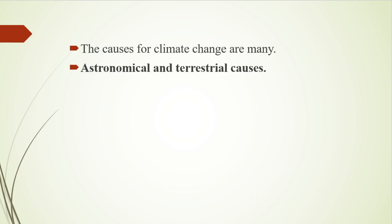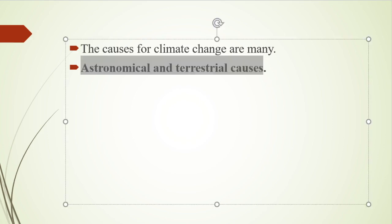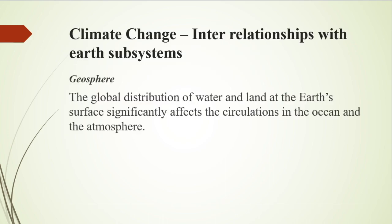The astronomical causes are changes in solar output associated with sunspot activities. Sunspots are dark and cooler patches on the sun which increase and decrease in a cyclical manner. The main causes of climate change also include humanity's increased use of fossil fuels such as oil and gas to generate electricity, run cars and other forms of transport, and power manufacturing and industry, as well as deforestation.